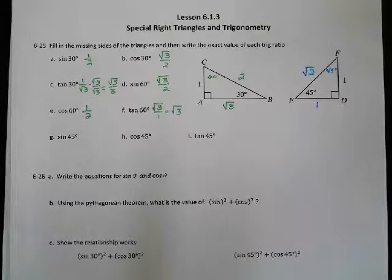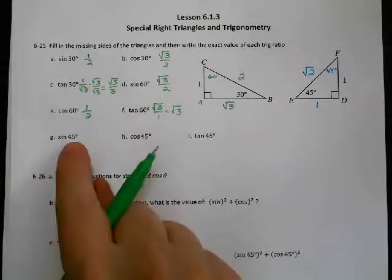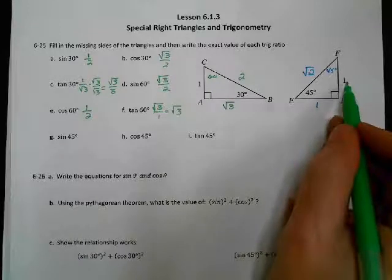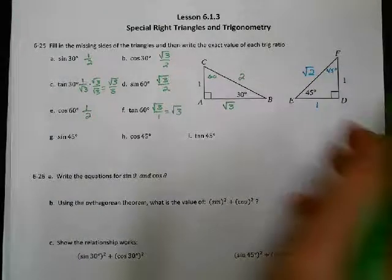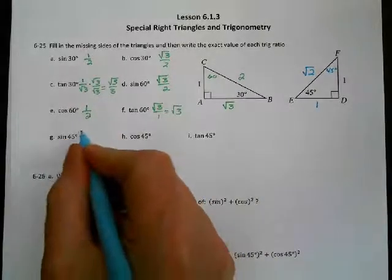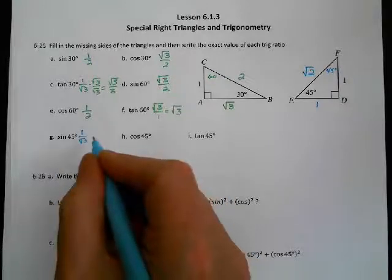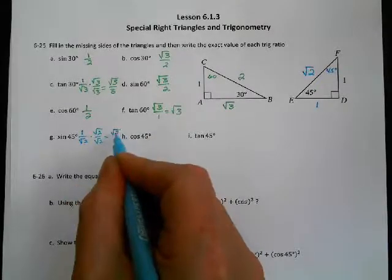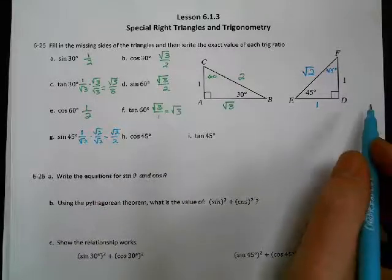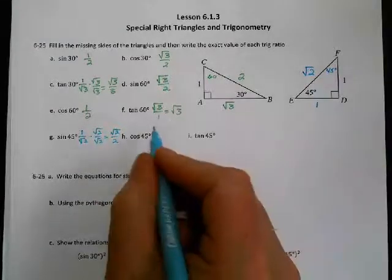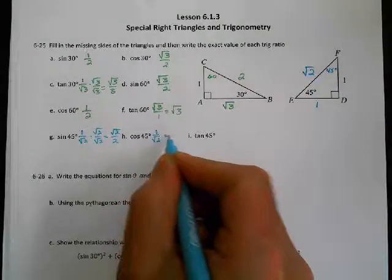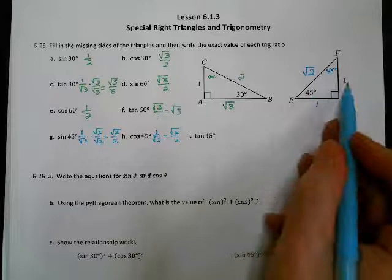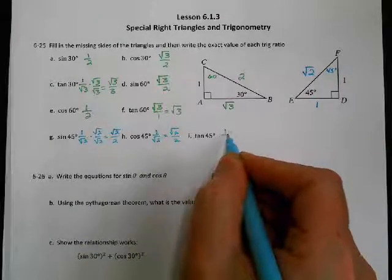For the 45-45-90 triangle, sine of 45 is opposite over hypotenuse. Since both legs are equal, that's 1 over root 2. But we can't have a radical in the denominator, so we multiply by root 2 over root 2 and get root 2 over 2. Cosine of 45 is adjacent over hypotenuse — it works out the same way, root 2 over 2. Tangent of 45 is opposite over adjacent, which is 1 over 1, or just 1.